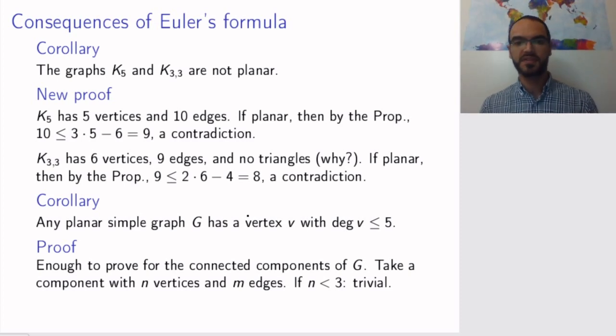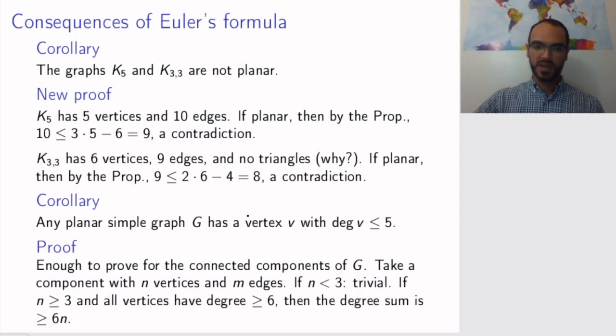If you have less than three vertices, this is trivial because the graph is simple, so you can have at most one edge. Definitely you will have degrees lower than five. If it is not, then we are now in the situation of having a planar simple graph with at least three vertices. So we can apply the theorem from the previous slides.